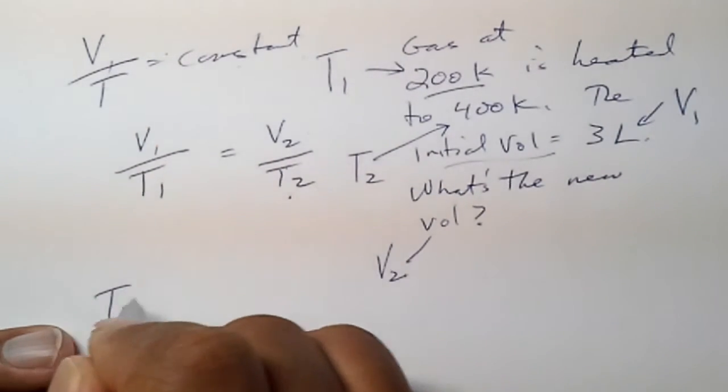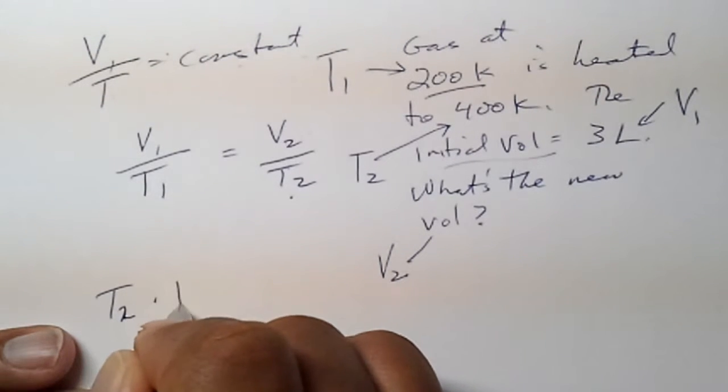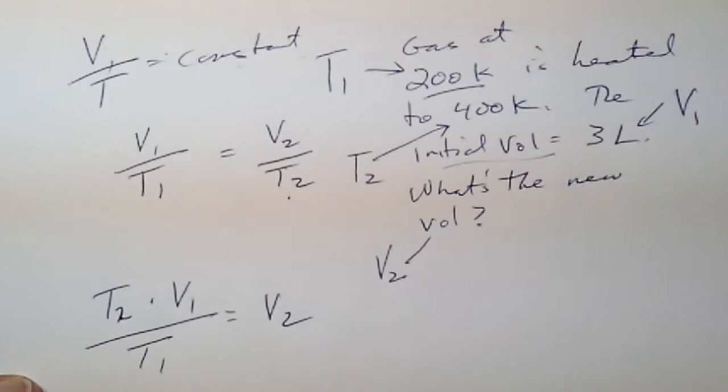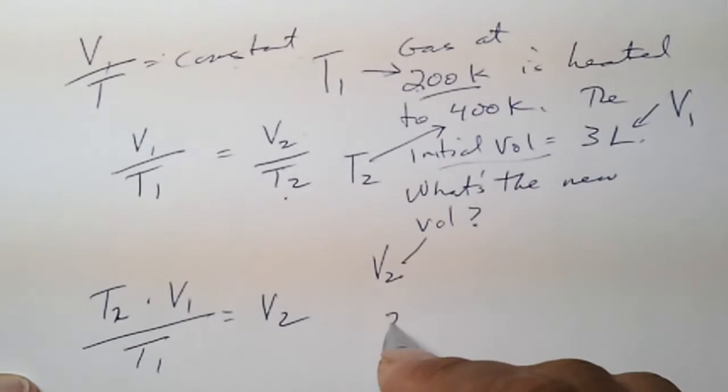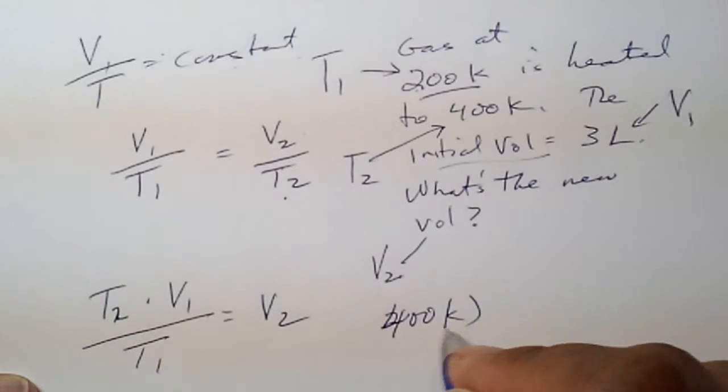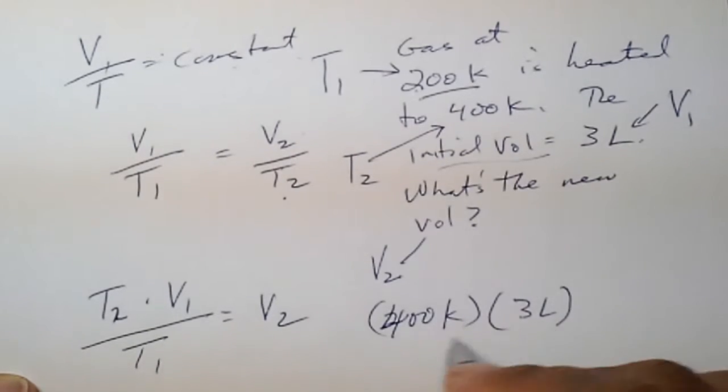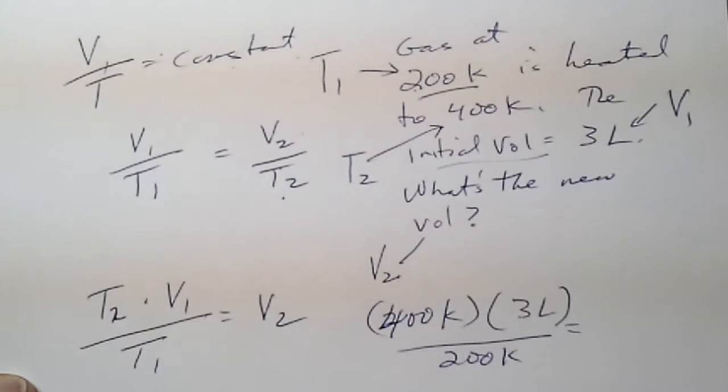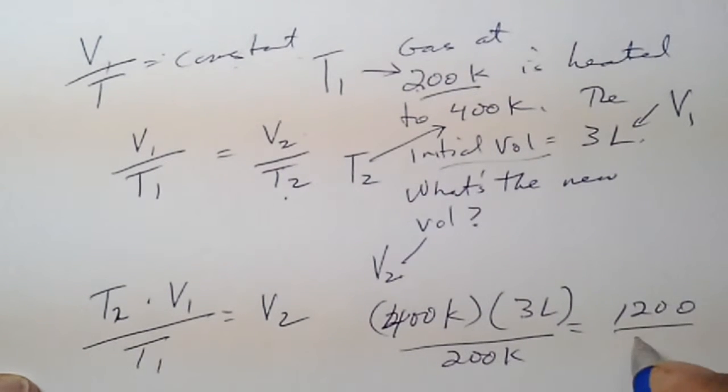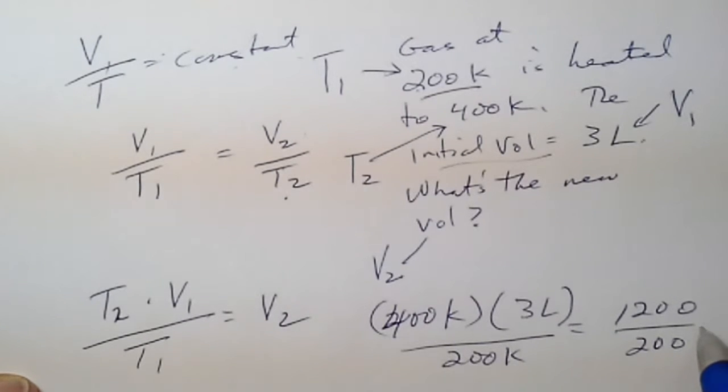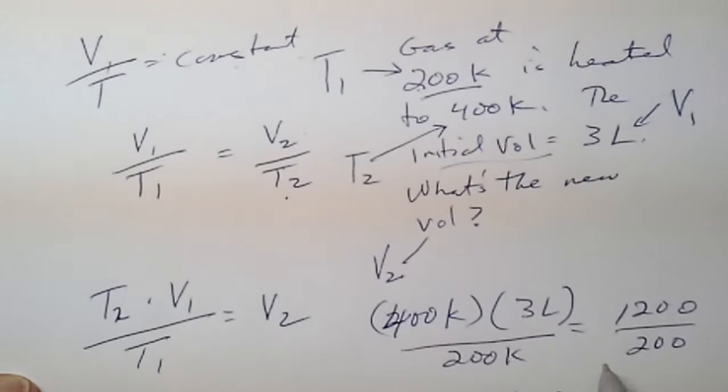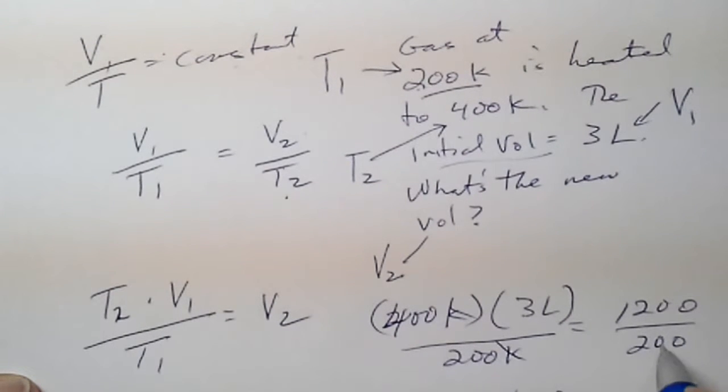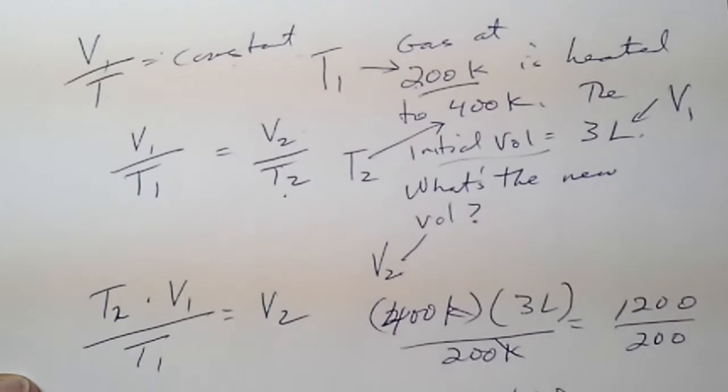We want to solve for V2. We have to multiply both sides by T2 to give us our equation that we can now plug in our values. 400 degrees Kelvin times 3 liters, divided by T1, which is 200 degrees Kelvin. If we multiply this out, that's 1200 over 200, which is equal to 600. That's 6.0, and that's in liters.